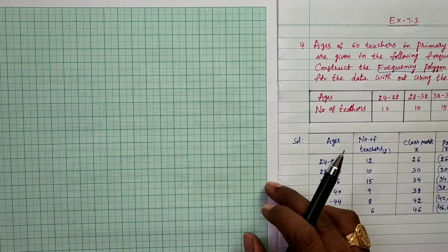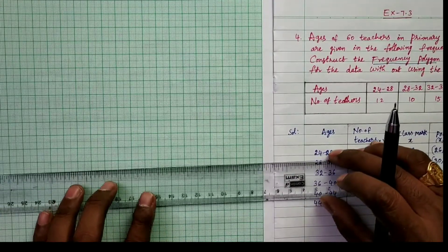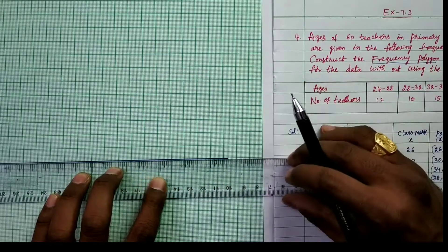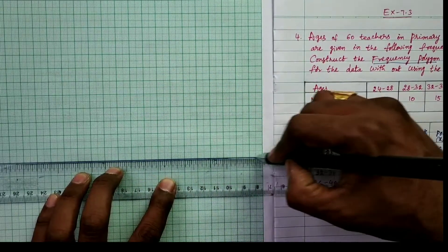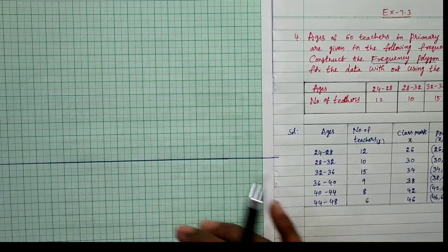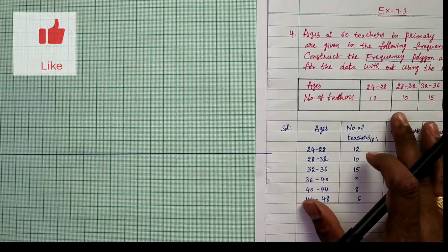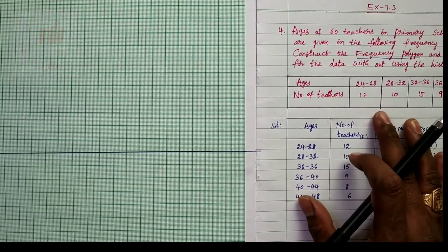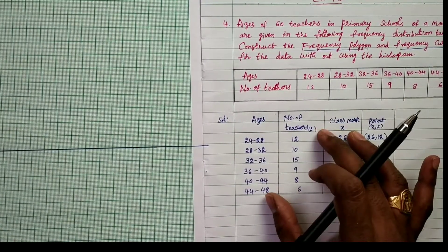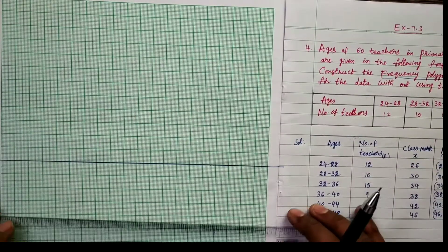Separate this graph into two parts — two graph sheets. One sheet for frequency polygon and one for frequency curve. The process for both graphs is the same up to plotting the points; there is no need to change the table.